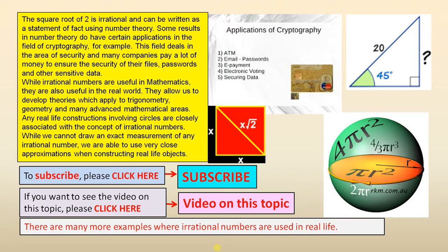The square root of 2 is irrational and can be written as a statement of fact using number theory. Some results in number theory do have certain applications in the field of cryptography, for example. This field deals in the area of security and many companies pay a lot of money to ensure the security of their files, passwords, and other sensitive data.